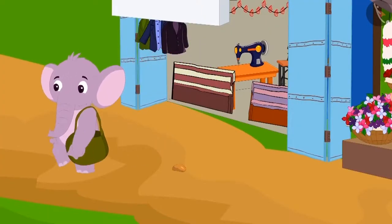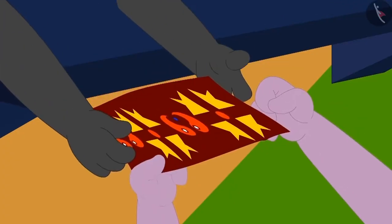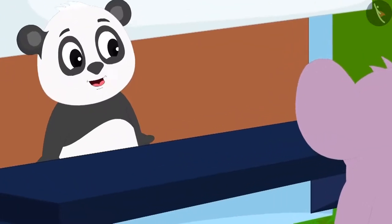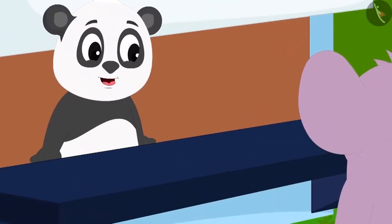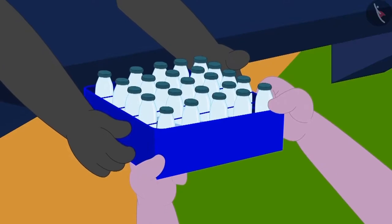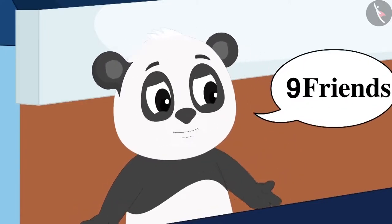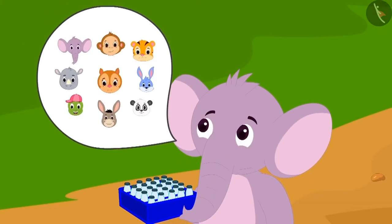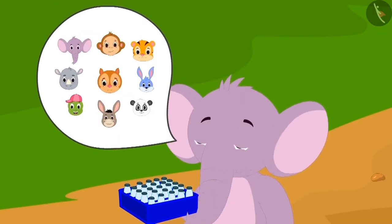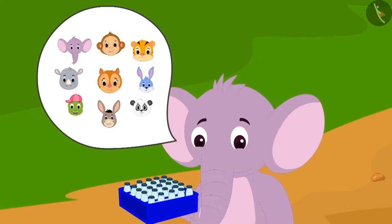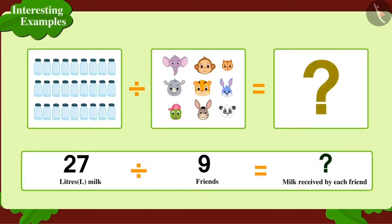Appu went to Golu's dairy to give him the fabric. Golu was delighted. He gave Appu 27 liters of milk, saying that all 9 friends would equally share the milk and drink it. Children, can you tell how many liters of milk each of Appu's friends will get? Well done, children! Each of Appu's friends will enjoy 3 liters of milk.